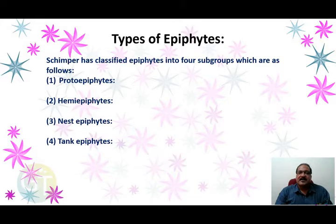Epiphytes are classified into four types by Shimpo. They are the proto-epiphytes, hemi-epiphytes, nest epiphytes, and tank epiphytes.